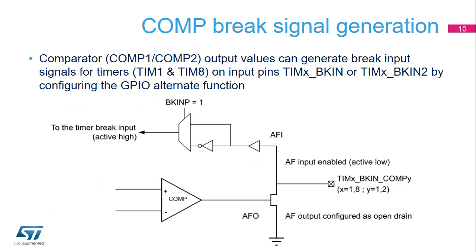Comparator output values can generate break input signals for the timers on input pins using GPIO alternate function selections, incorporating the I/O open-drain connection. The purpose of the brake function is to protect power switches driven by PWM signals generated by timers. The two brake inputs are usually connected to fault outputs of power stages and three-phase inverters. When activated, the brake circuitry shuts down the PWM outputs and forces them to a predefined safe state. Please see the timer training slides for more details.